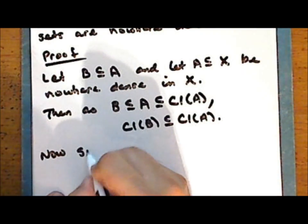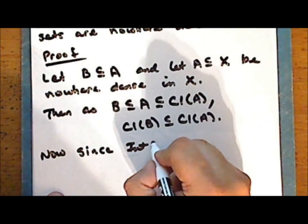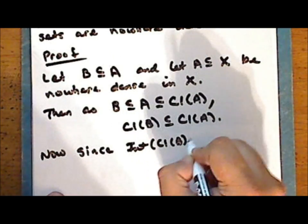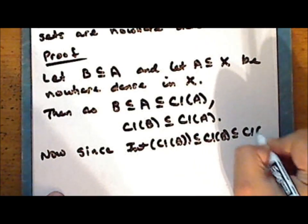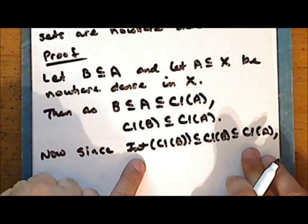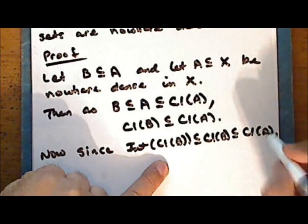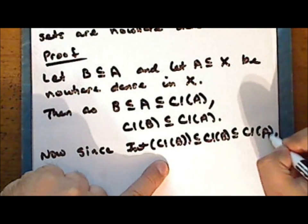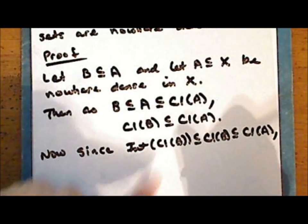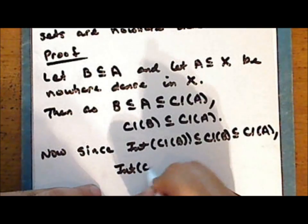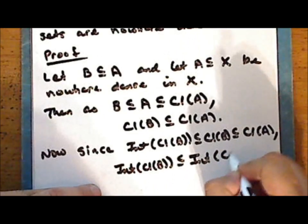Now since the interior of the closure of B is a subset of the closure of B, which is itself a subset of the closure of A, we have that the interior of the closure of B is an open set contained in the closure of A. And since the largest open set contained in the closure of A is the interior of the closure of A, we have that the interior of the closure of B is a subset of the interior of the closure of the set A.